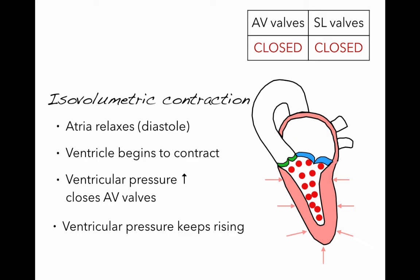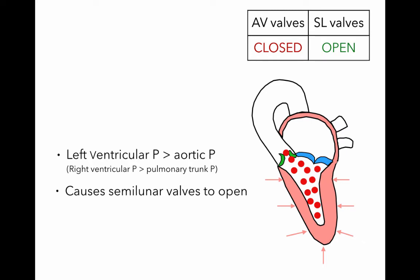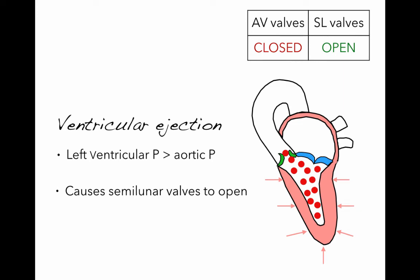Finally, the pressure rises so high compared to the pressure in the aorta — the pressure in the aorta is about 80 mmHg — so the pressure needs to become greater than 80 mmHg for the semilunar valves to open up. Left ventricular pressure becomes greater than aortic pressure on the left side, and on the right side, right ventricular pressure must become greater than pulmonary trunk pressure. This causes the semilunar valves to open up, while the AV valves stay closed because of the chordae tendineae and papillary muscles. We call this phase ventricular ejection.